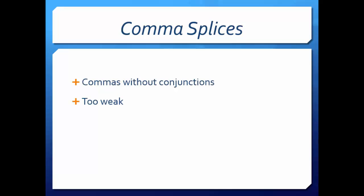The use of a comma to separate two independent clauses without the addition of an appropriate conjunction is called a comma splice. Only appropriate conjunctions can adequately link and separate two independent clauses: coordinating conjunctions, conjunctive adverbs, semicolons, or sometimes colons.